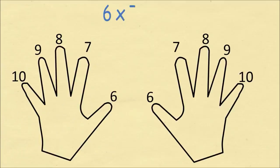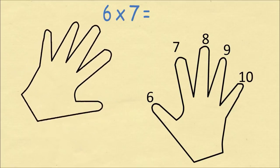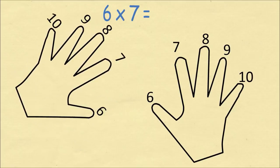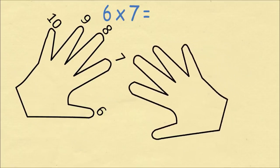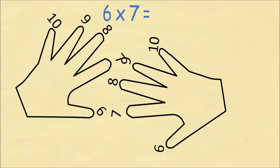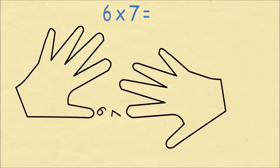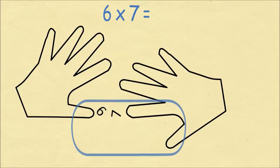This procedure always works for the numbers 6 through 10. Let's do a final example of 6 times 7. We'll rotate our left hand so we have the thumb as the finger 6. We rotate our right hand to the index finger of 7. Now we count the number of fingers that are below the two fingers which are touching, including those two fingers.